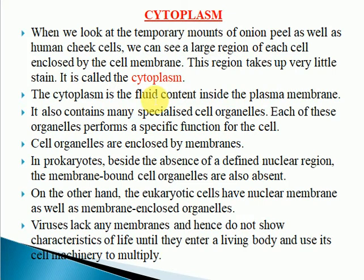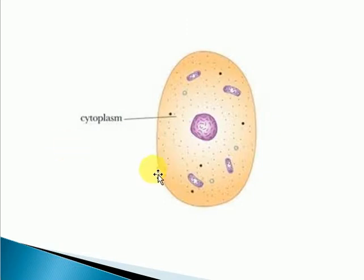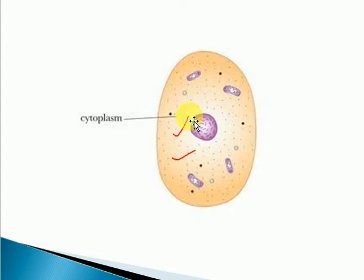When we look at the temporary mount of onion peel as well as human cheek cell, we can see a large region of each cell enclosed by the cell membrane. This region takes very little stain and is called the cytoplasm. Once we make a slide of onion peel or human cheek cell, we observe that the region which is very lightly stained is the cytoplasm, and it is the ground substance of the cell.